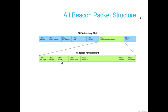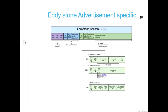Eddystone is an advertisement-specific beacon with three types: UID, URL, and telemetry. Although their front-end flags and services in the advertisement are the same, their frame structures are quite different. The packet starts with flags, then we have services with a UUID of 0xFEAA — this is advertisement-specific so it is presented as a service. Then we have a length and a type, followed by the UUID again.